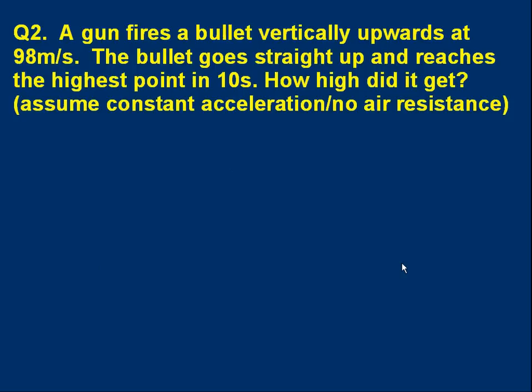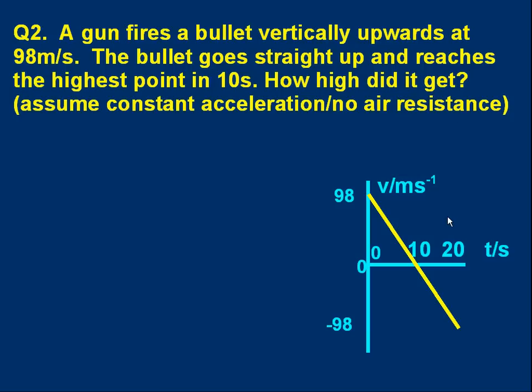Try another one. A gun fires a bullet vertically upwards at 98 meters per second. The bullet goes straight up and reaches the highest point in 10 seconds. How high did the bullet get? And you can assume constant acceleration, which in effect means no air resistance. Pause the video, try that. Let's go through this. It will help because it's such a common problem just to remind ourselves of the velocity-time graph. That would be it. It starts off with an upwards velocity plus 98 meters per second. As it gets higher, the bullet slows down. At the highest point, its velocity is zero. It's instantaneously at rest. Then, of course, it starts to come downwards. So it's got an increasing negative velocity. And it will return to the level of the gun after another 10 seconds, a total of 20 seconds.